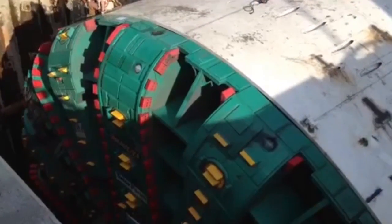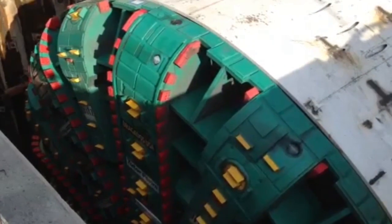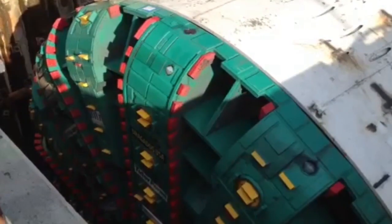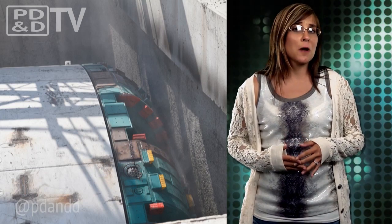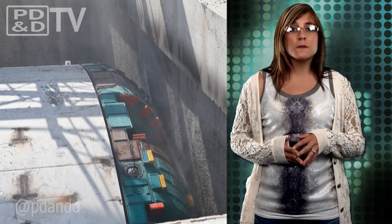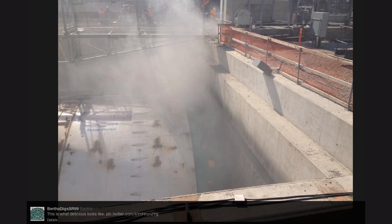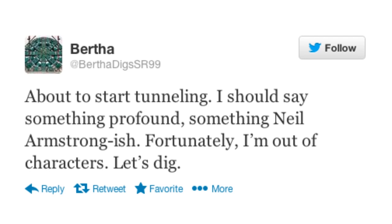According to the Washington State Department of Transportation, the project was designed to have opportunities to test the machine and make sure Bertha's functioning properly before she heads downtown. If Bertha was learning to ride a bike, this initial section would be her training wheels. The tunnel is scheduled to open in late 2015, and if you're interested in checking up on Big Bertha's progress, check out her tweets at BerthaDigSR99. Like this gem: this is what delicious looks like, or about to start tunneling, I should say something profound, something Neil Armstrong-ish. Fortunately, I'm out of characters. Let's dig!